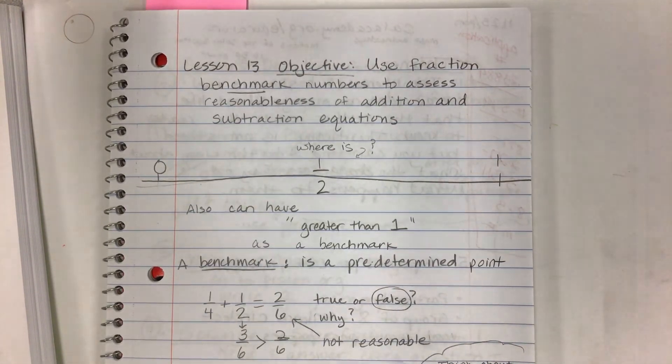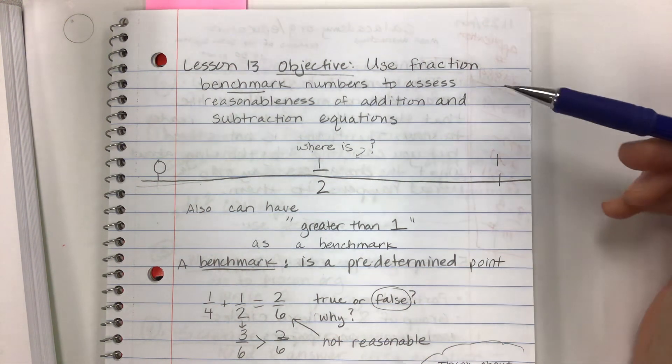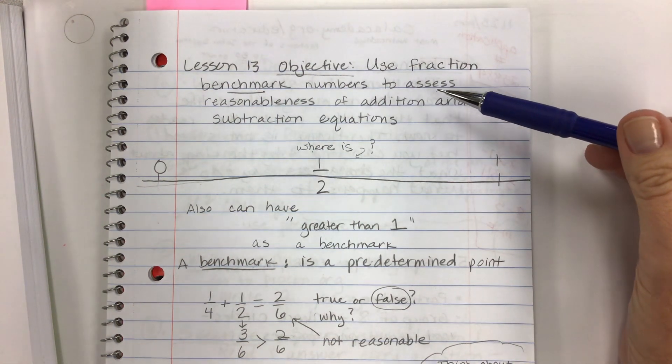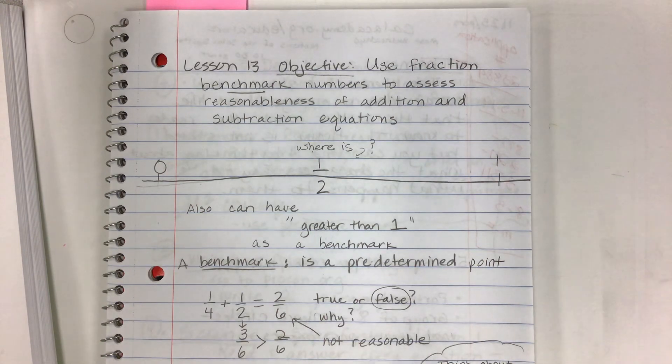Hi kids! Today we're going to do lesson 13 in module 3 and it's a little bit different. We're talking more about using benchmark numbers to assess reasonableness of addition and subtraction equations. So the emphasis today isn't on getting the actual number, even though you have to have an answer. The answer is going to be: is this reasonable? And where are we in relation to one or in relation to a half? So it's really all about reasoning.